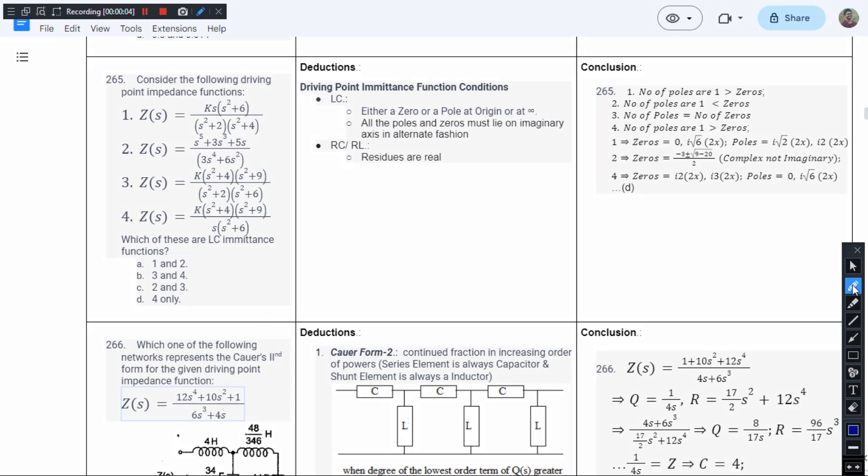This is question number 265 from Chapter 1 of JB Class Book. The question goes like this: Consider the following driving point impedance functions and which of these are LC impedance functions. So we need to note down the properties.